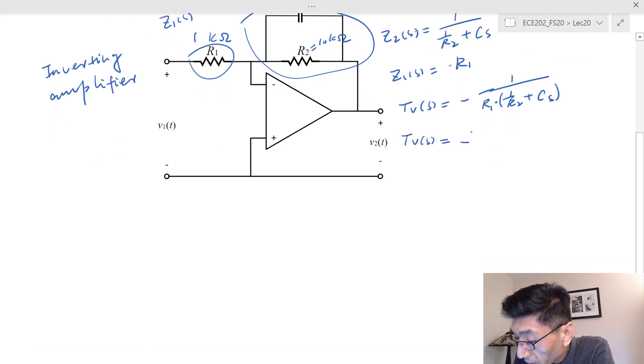Let's see how that goes. Multiplying by R2 over R1, TV(s) is going to equal negative—on the numerator I get R2 over R1. On the denominator I get 1 plus R2 times C times s.